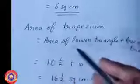Therefore, the area of the trapezium equals the area of the lower triangle plus the area of the upper triangle, that is 10 and a half plus 6, equal to 16 and a half square centimeters. To understand the general method, let us take the lengths of the parallel sides of a trapezium as a and b, and the distance between them as d.